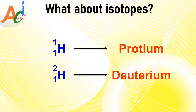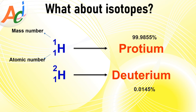Protium, denoted as ¹₁H, is the most common isotope of hydrogen. The superscript indicates the mass number, which equals the number of protons and neutrons, whereas the subscript denotes the atomic number, representing the number of protons. Deuterium is denoted by ²₁H — the mass number is 2, but the atomic number remains the same at 1. Most hydrogen gas we encounter consists of the protium isotope, making up about 99.9985%, with the remaining approximately 0.0145% being deuterium.